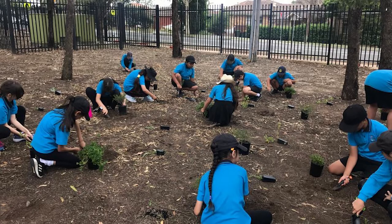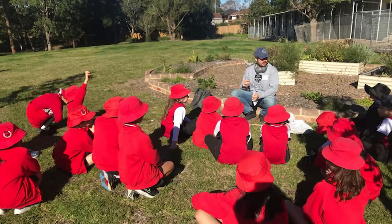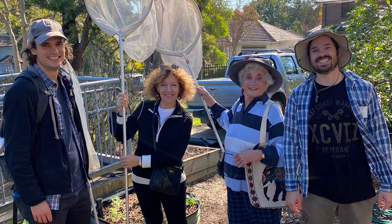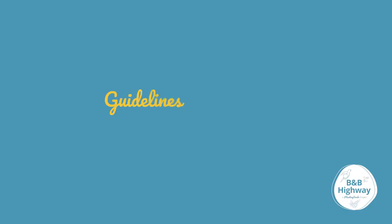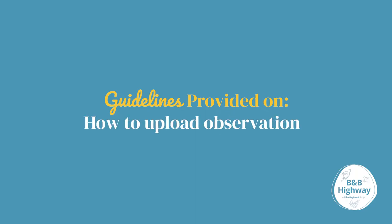Planting Seeds implements and supports regeneration activities and education in a number of Australian states through the B&B Highway. There will be 100 B&Bs — which stands for Bed and Breakfasts for Birds, Bees and Biodiversity — by year end, creating regenerative corridors and sanctuaries for people, plants and pollinators whose numbers are declining. For the BioBlitz, schools will be provided with guidelines and instructions to show how easy it is to use devices to take observations and contribute them to biodiversity databases.